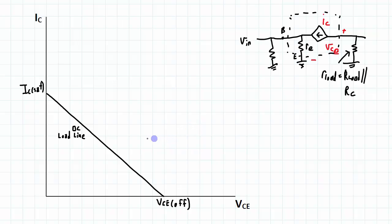To get an understanding of what the AC load line is, let's go back to the DC load line and assume that we are biased right in the middle of the DC load line. Here's our operating point Q, and the operating point of Q is VCEQ,